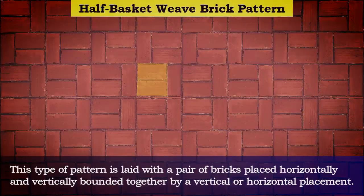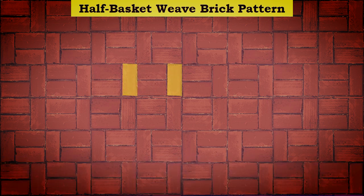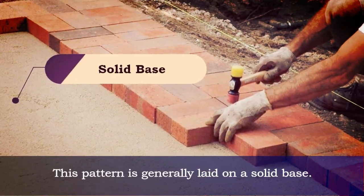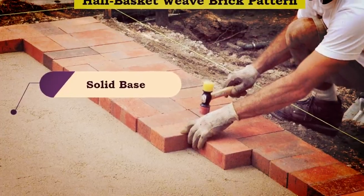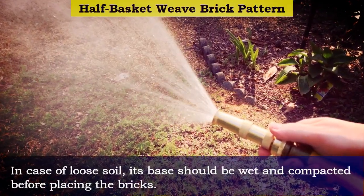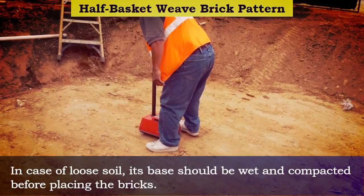Half Basket Weave Brick Pattern. This type of pattern is laid with a pair of bricks placed horizontally and vertically, bounded together by a vertical or horizontal placement. This pattern is generally laid on a solid base. In case of loose soil, its base should be wet and compacted before placing the bricks.